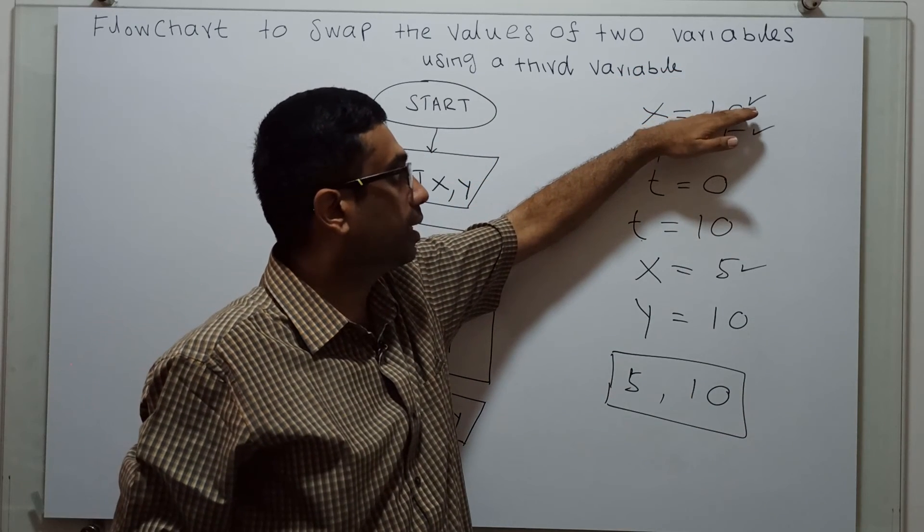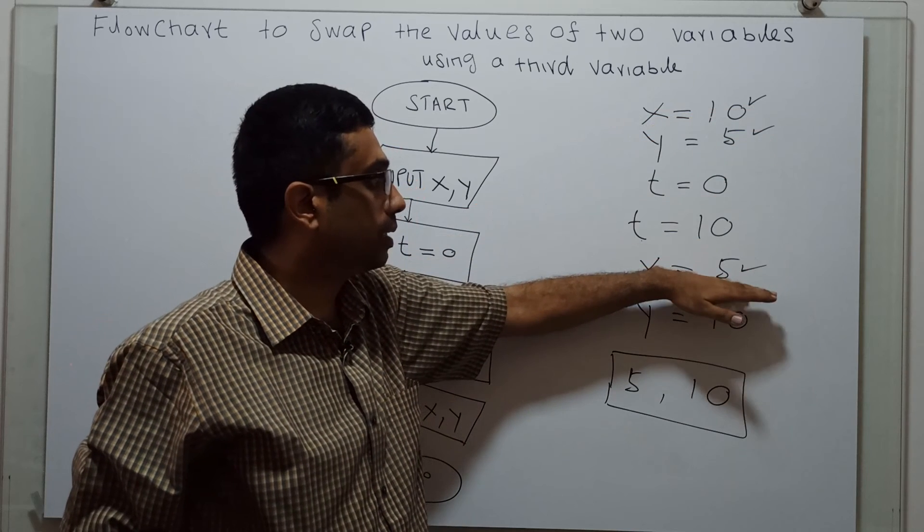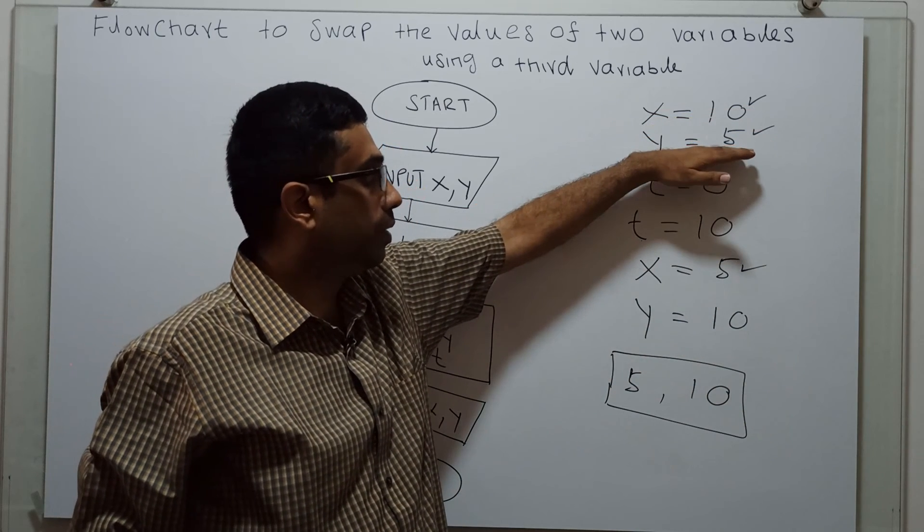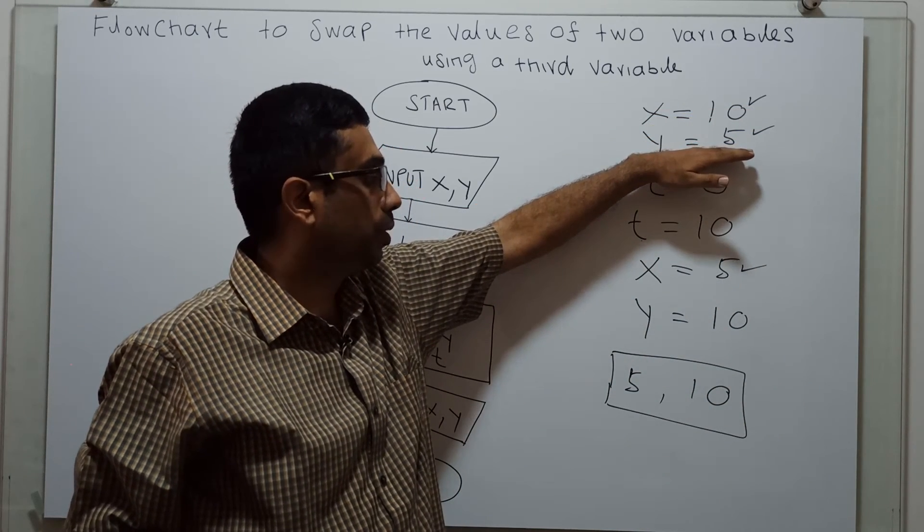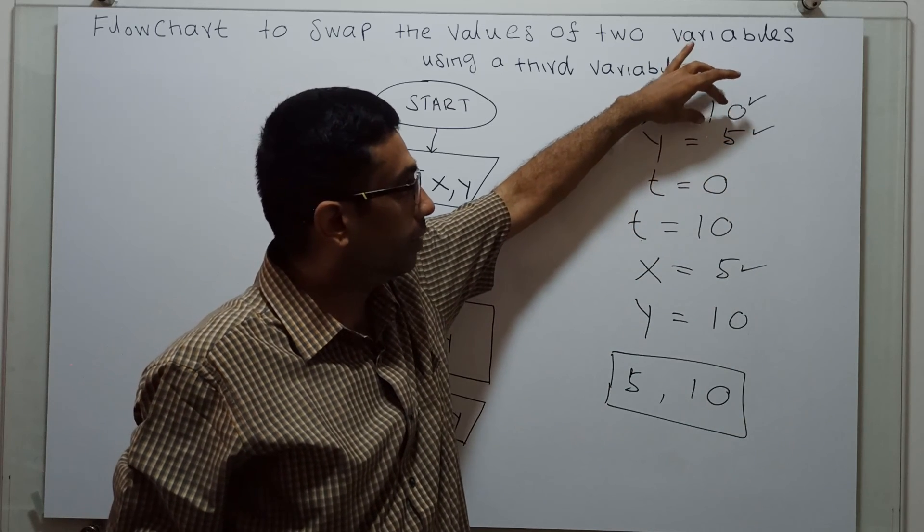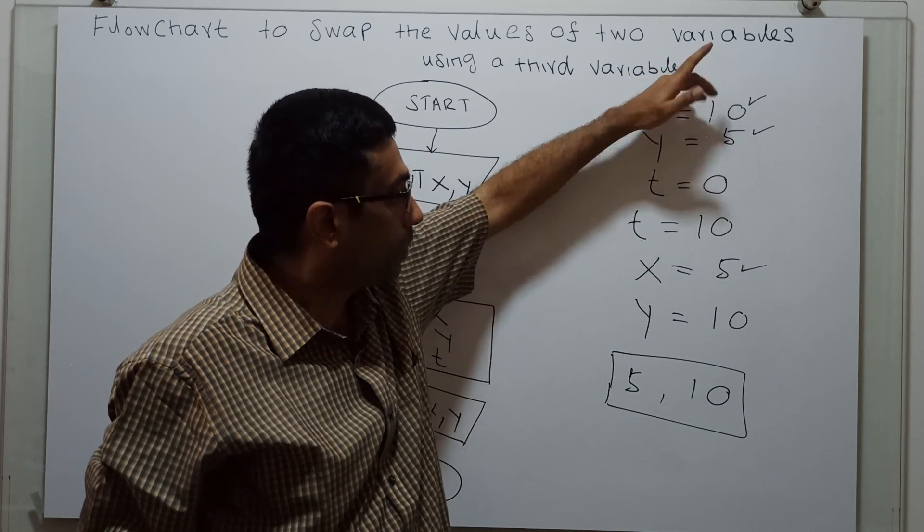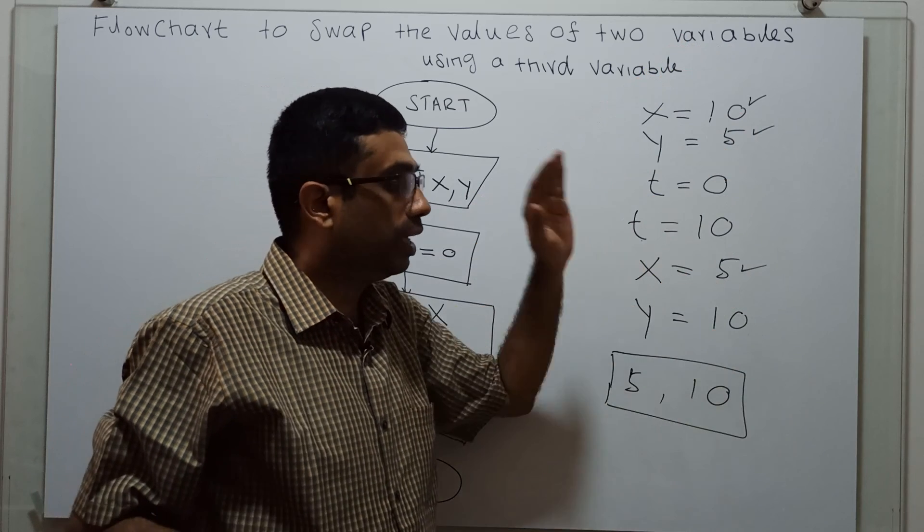x is 10 in the initial stage when I give the input. Now, x is 5. y is 5 in the initial stage. Now, y is 10. So, the values of 10 and 5, x value and y value, get swapped. That's why x equal to 5 and y equal to 10.